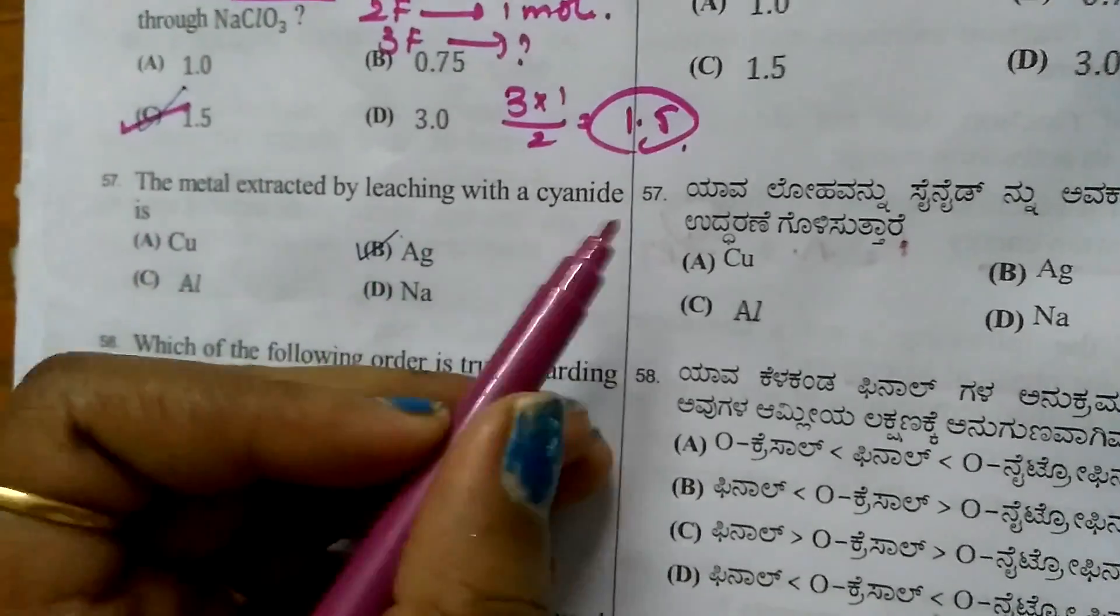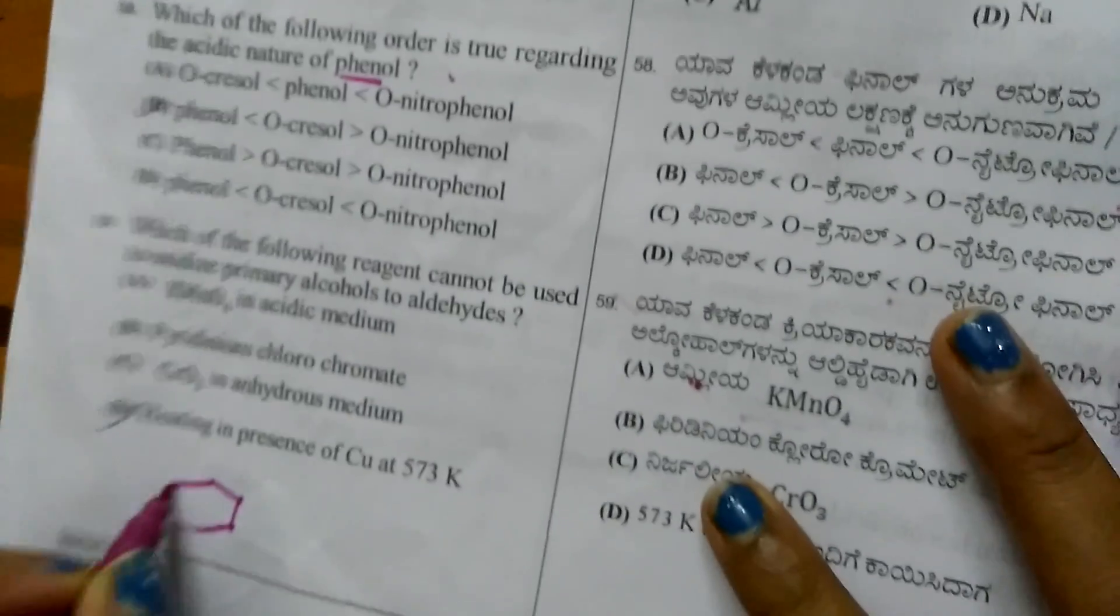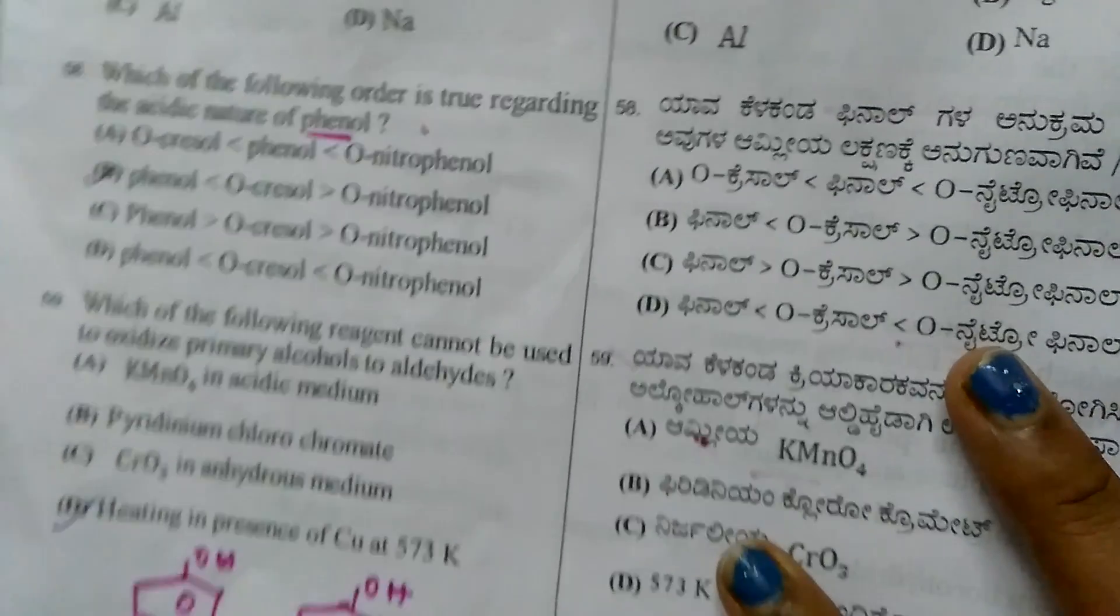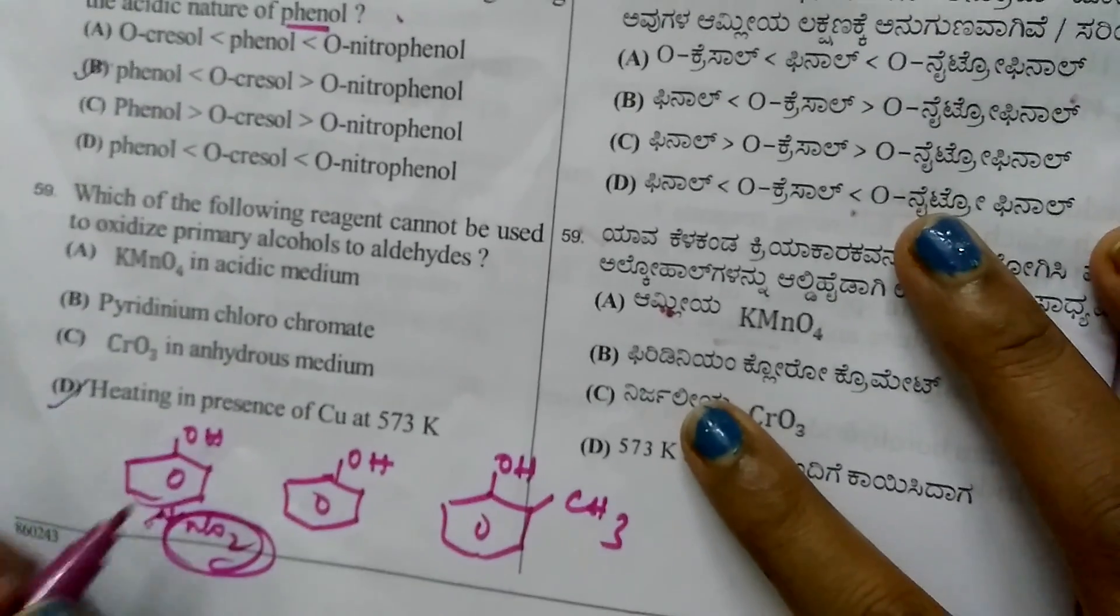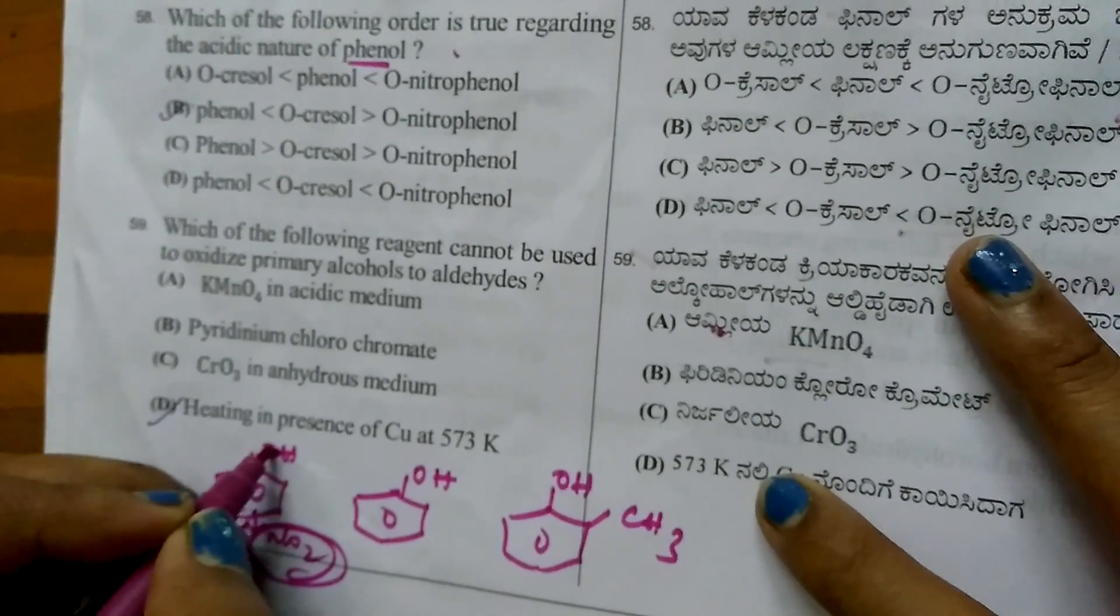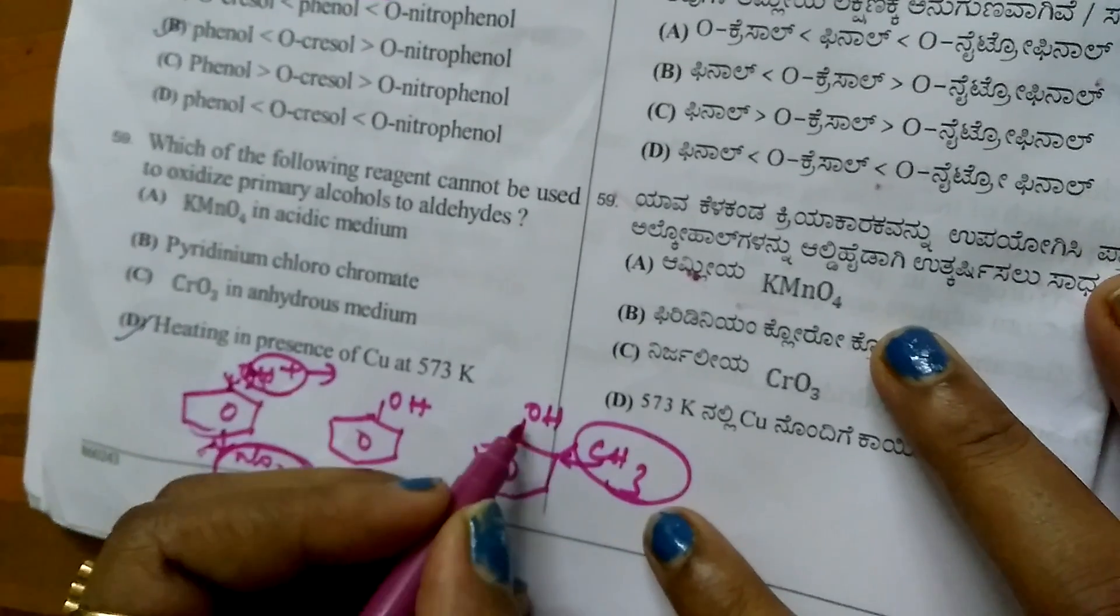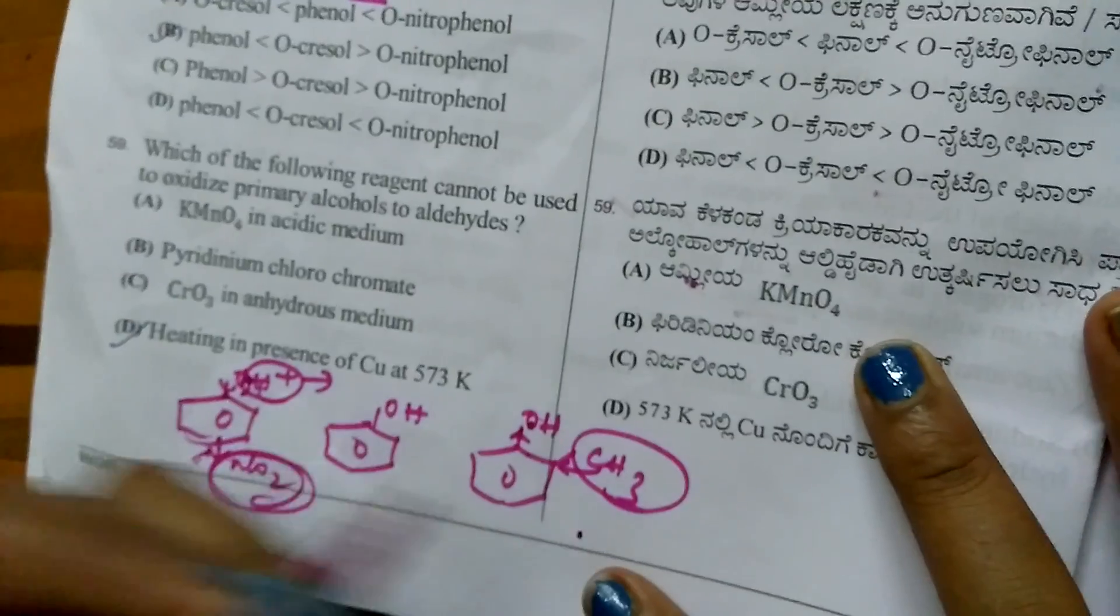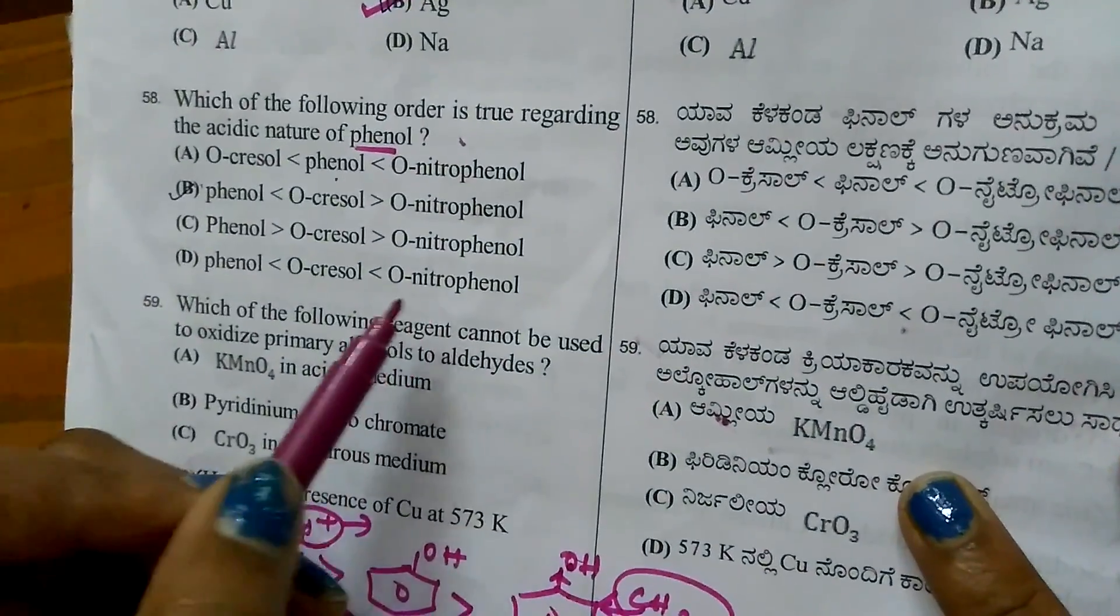Question 57: Metal extracted by leaching with cyanide is silver. Question 58: True order of acidic nature of phenols. Nitrophenol has electron-withdrawing group drawing electrons from ring, making oxygen deficient and H+ more easily released. Electron-releasing group in cresol increases electron density, making it less acidic. Order: ortho-nitrophenol > phenol > cresol.